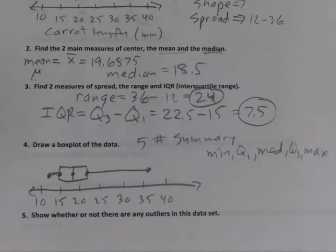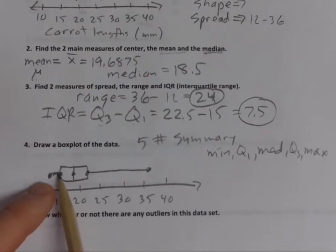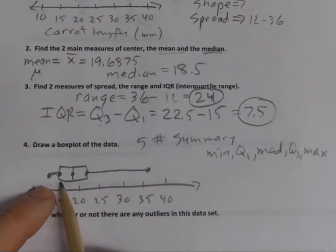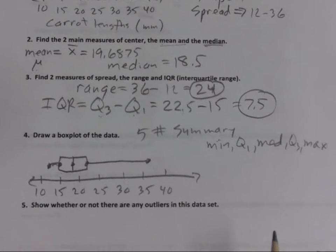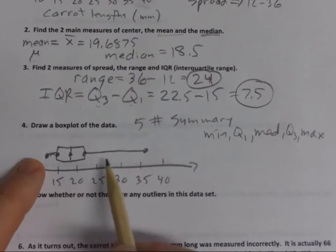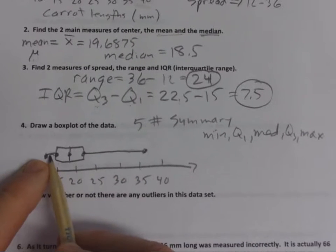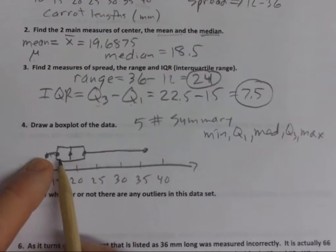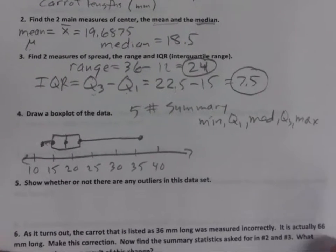If two of the numbers had been the same — say the min and Q1 were both 15 — you'd just put one dot and have no whisker on the left side. One thing the box and whisker plot allows us to do is easily see skewness. This data is skewed to the right because the right whisker is much bigger than the left.